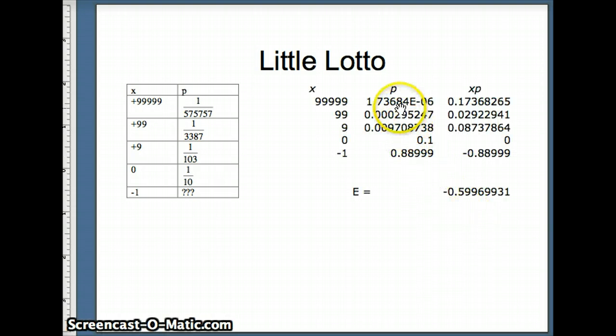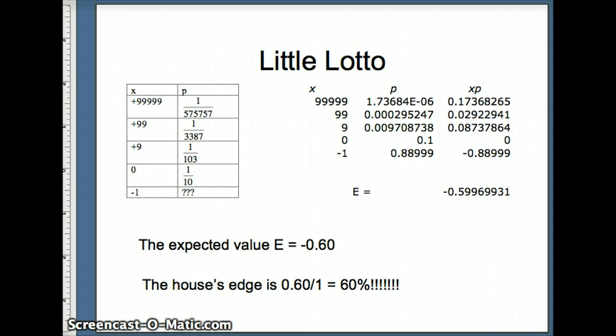Using Excel, we have all of these numbers. Your probability of losing, as it turns out, is 0.88999. Multiplying your x times p, and notice that e to the negative 6, that's corresponding to scientific notation. Our expected value here is negative 0.599699. The expected value on this game is negative 0.60. In this case, the state takes $0.60 on every dollar that's gambled.